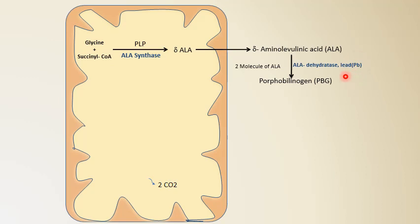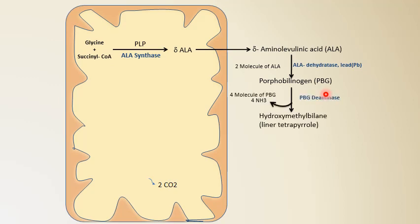That is one clinical application. After conversion of delta-aminolevulinic acid to porphobilinogen, four molecules of porphobilinogen condense with elimination of four molecules of ammonia, leading to an intermediate compound called hydroxymethylbilin, which is a linear tetrapyrrole structure. This step is carried out by the enzyme porphobilinogen deaminase.